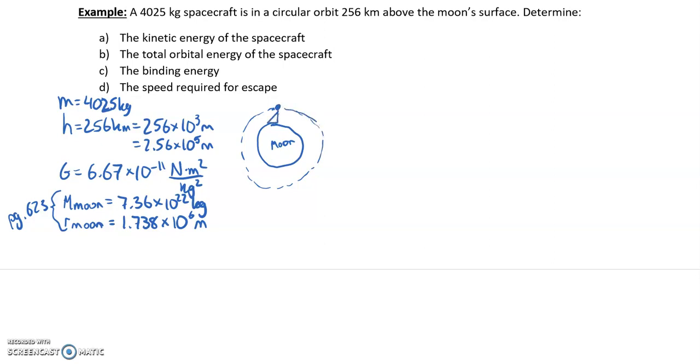If we're considering the height of its orbit, here's the height of its orbit. And we're also considering the radius of the moon. The total distance between their centers, which is the R that we're interested in here, is actually the radius of the moon plus the height. Don't miss that.